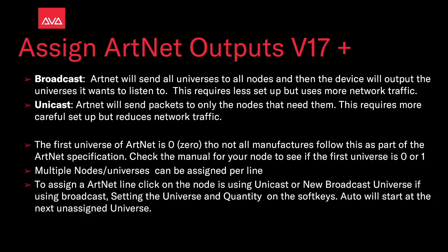Multiple nodes and universes can be assigned per line. To assign an ARTNET line, click on the node using Unicast or the Broadcast universe if using Broadcast. Set the universe and quantity on the soft keys. Auto will start at the next unassigned universe. So let's have a look at that.